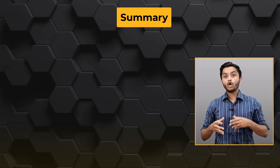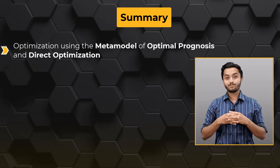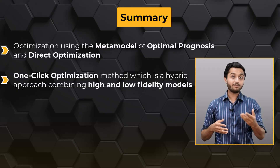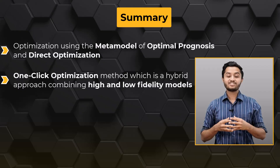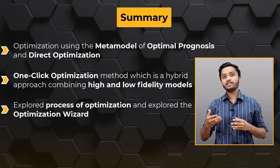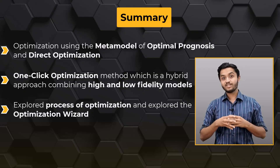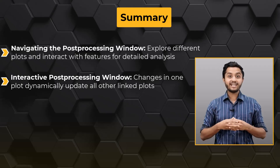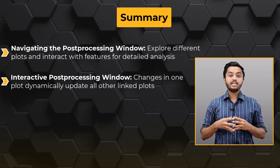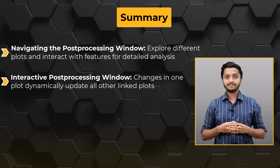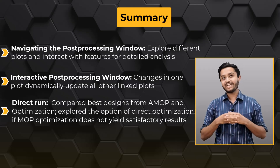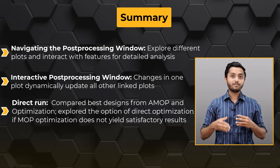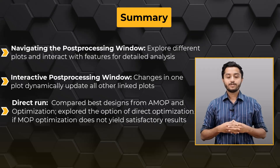To summarize, in this lesson we explored optimization using the metamodel of optimal prognosis (MOP) and direct optimization in the ANSYS OptiSlang application. We learned about the one-click optimization method, which is a hybrid approach combining high and low fidelity models. We discussed the process of optimization and explored the optimization wizard, detailing how to initiate optimization using MOP. Post-processing was another key topic, where we looked at how to navigate the post-processing window and interpret the various plots displayed, including the interactive nature of the window where a selection in one plot affects corresponding changes in all other plots. Lastly, we compared the best design from the AMOP sensitivity analysis with that obtained after optimization on MOP and highlighted the option of conducting a direct optimization if the optimization on MOP does not yield satisfactory results.